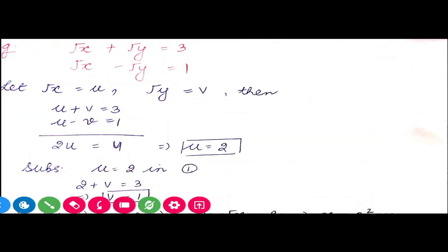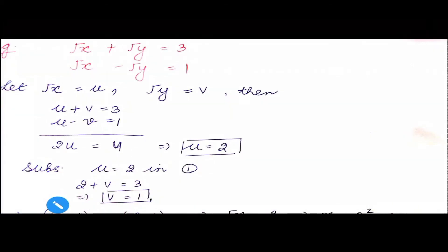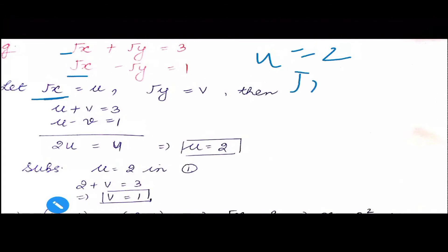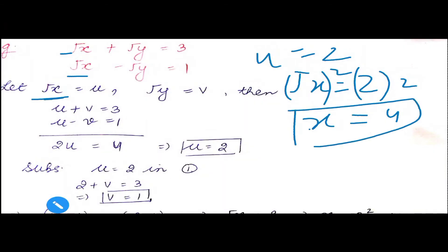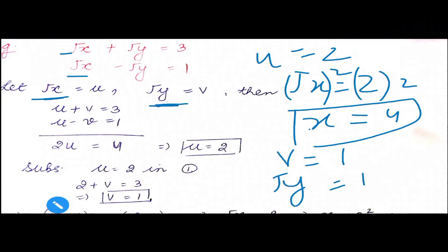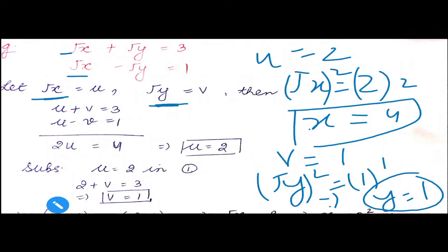We got u equals 2. Substituting into the first equation: 2 plus v equals 3, so v equals 1. Now u and v are found, but we need x and y. Since u equals root x equals 2, squaring both sides gives x equals 4. Since v equals root y equals 1, squaring both sides gives y equals 1. So the solution is x equals 4, y equals 1.